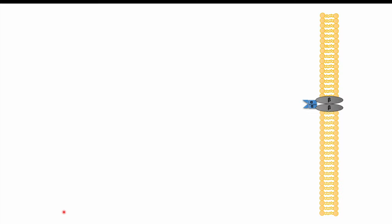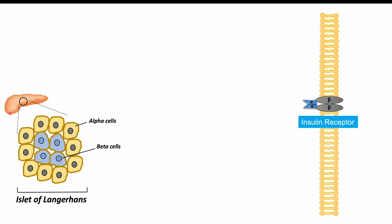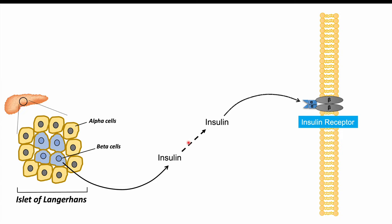Let's talk about the pathophysiology of gestational diabetes. In the pancreas, there are islets of Langerhans — groups of cells containing beta cells and alpha cells. Beta cells produce insulin, which acts on insulin receptors to bring glucose into the cell. This doesn't happen in all cell types; some, like skeletal muscle, require insulin receptor activation to bring glucose into the cell.